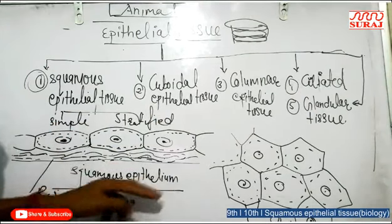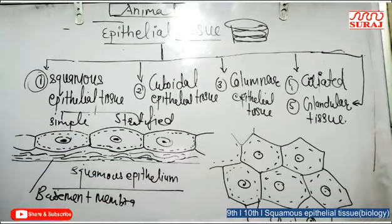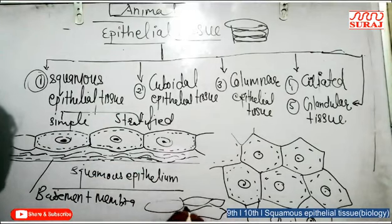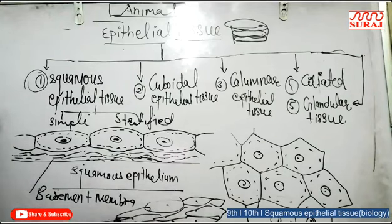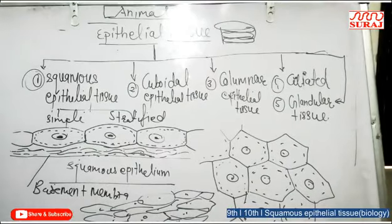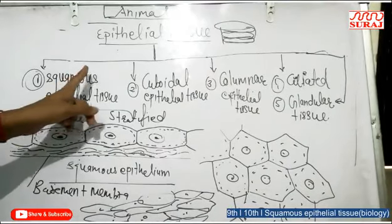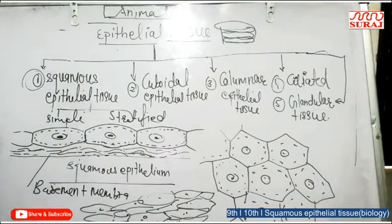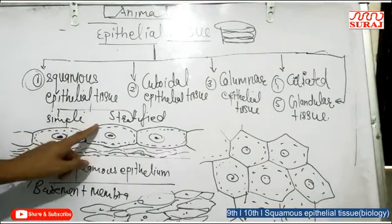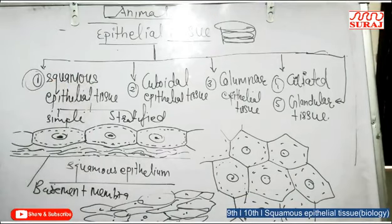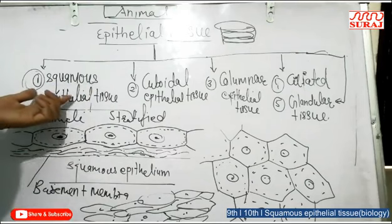Stratified or multilayered epithelial tissue has many layers of cells attached to each other. It is mainly present in the skin, because having many layers provides wear and tear resistance, preventing the skin from wearing and tearing. This type is also known as stratified epithelial tissue — 'strata' meaning many layers.